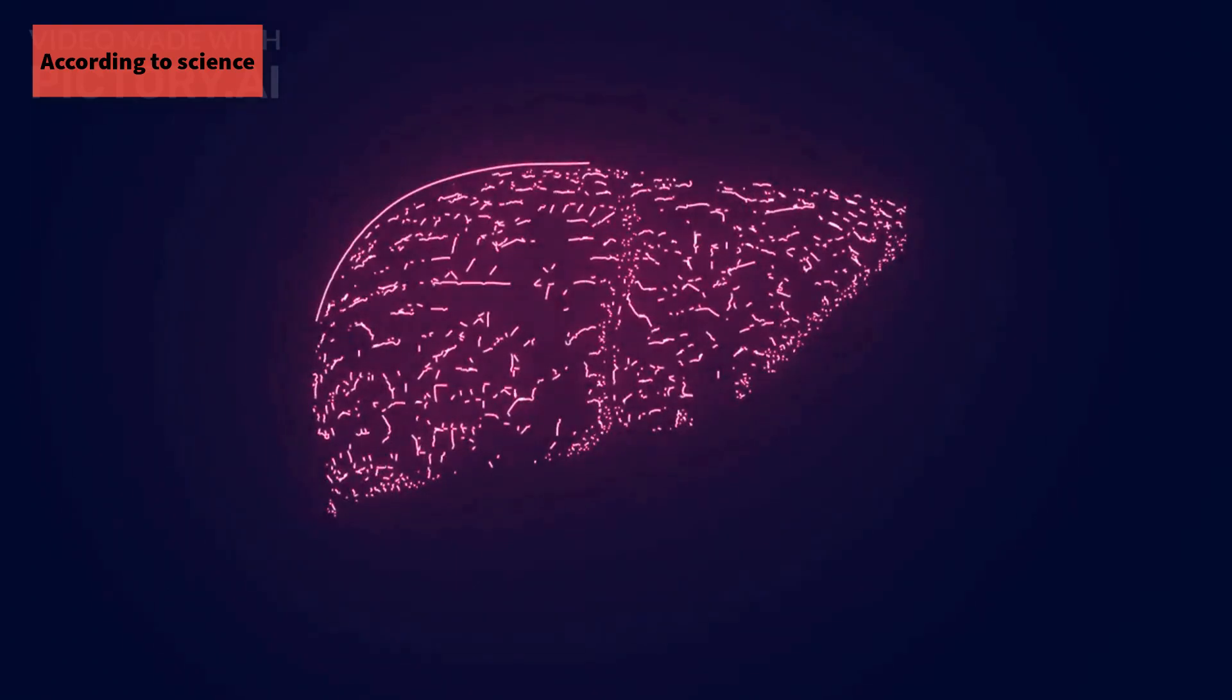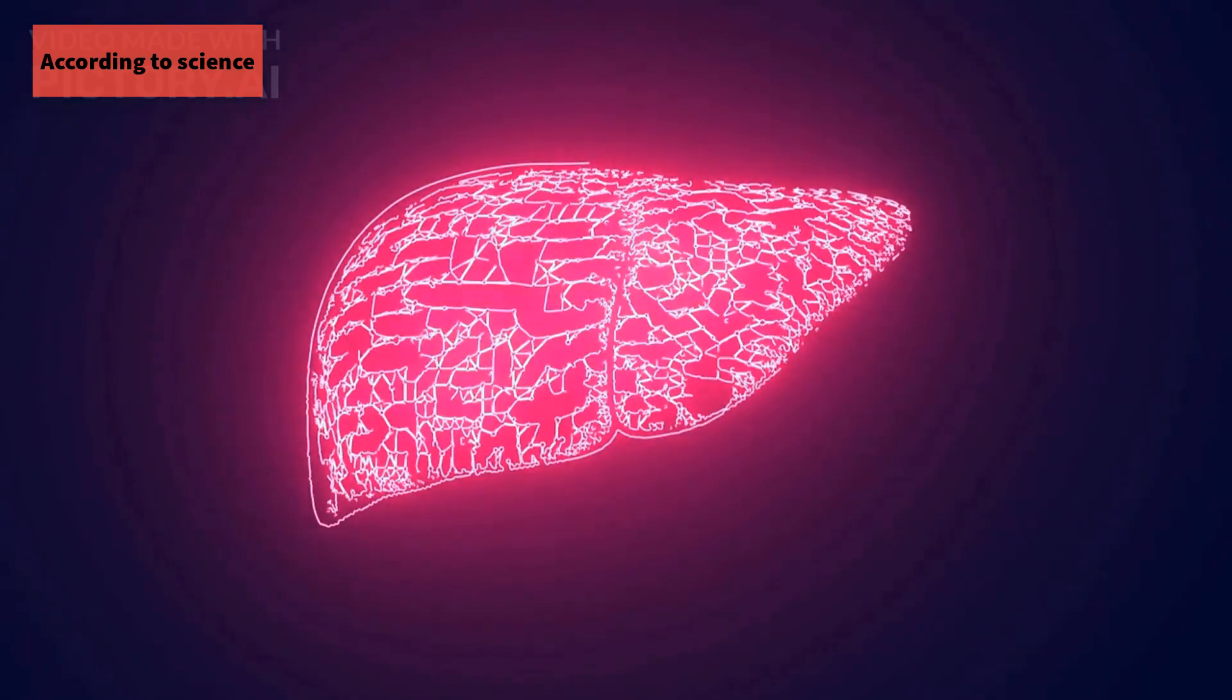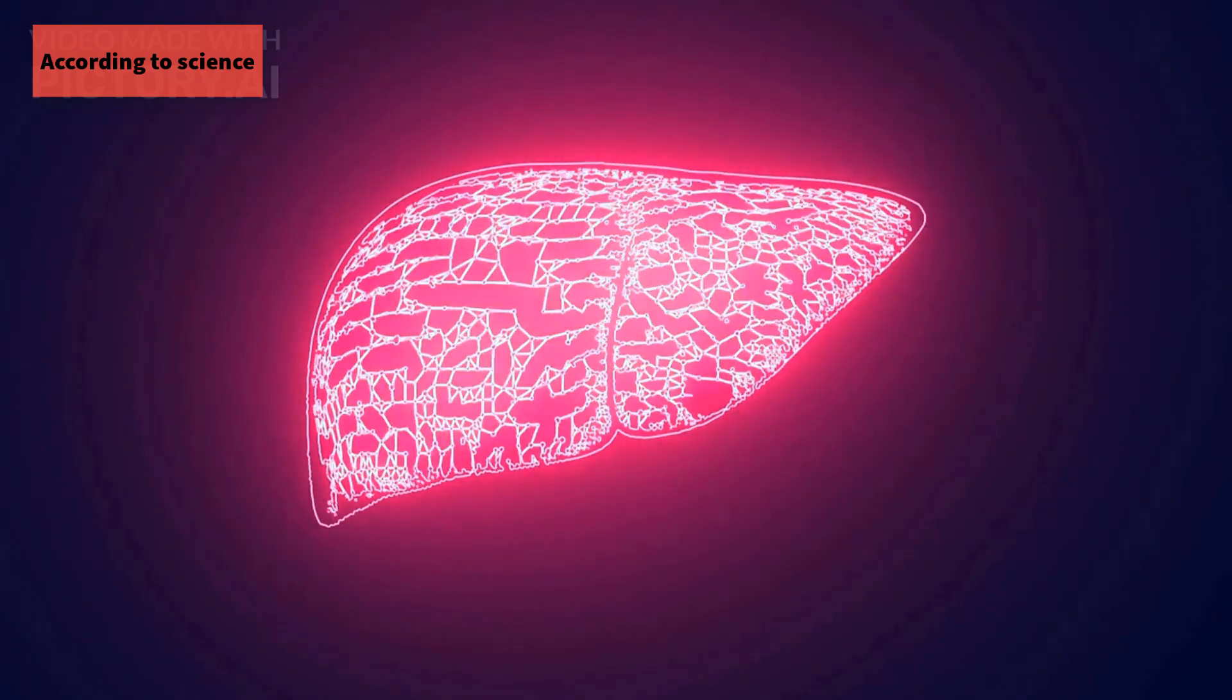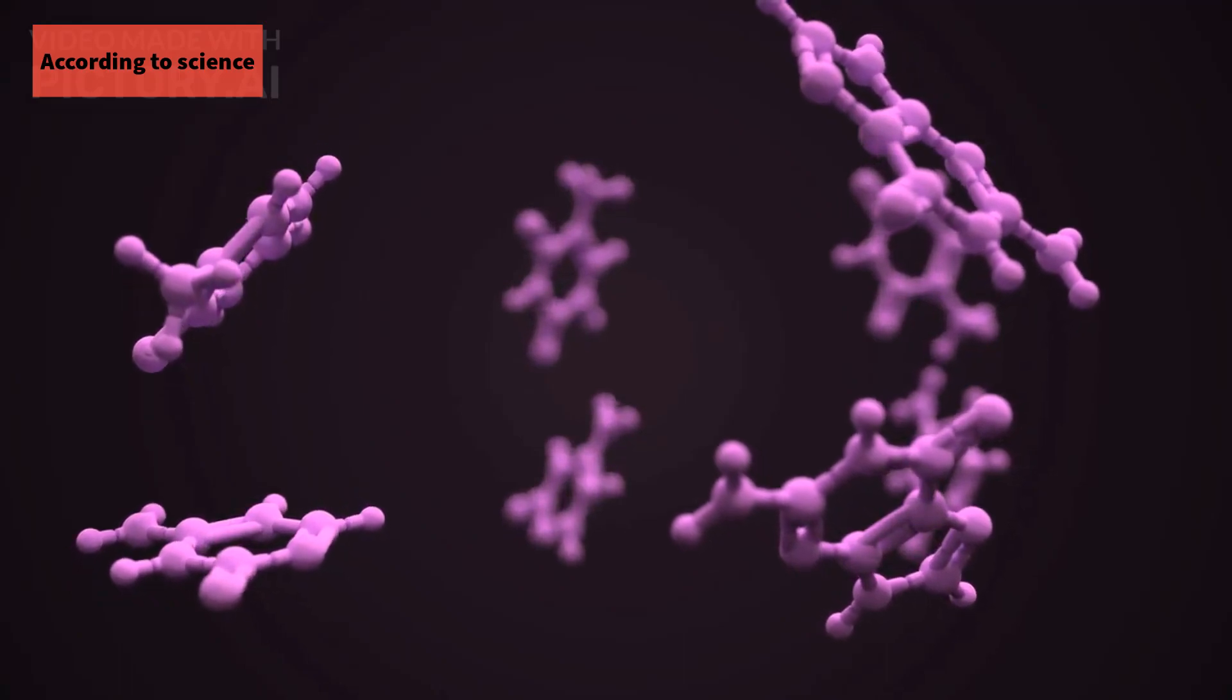Phenylalanine is required for the production of chemical messengers in your brain, such as dopamine, epinephrine, and norepinephrine. It is also required for the synthesis of other amino acids.